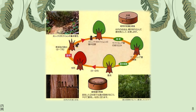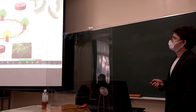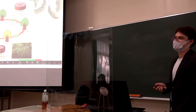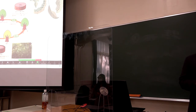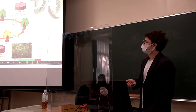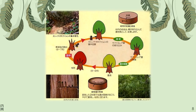Here we can see the life cycle of the ambrosia beetle. Beetles carrying the fungus infect a tree, bore holes in it, and the fungus spreads inside and slowly kills the tree. At the same time, the beetles lay eggs inside the tree. When larvae hatch, they feed on the fungus, turn into adults, and the cycle repeats. In the meantime, the tree dies and the cycle starts over.